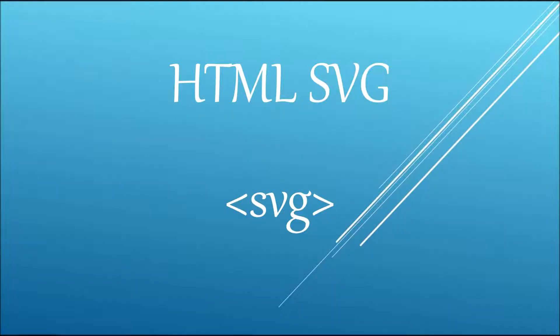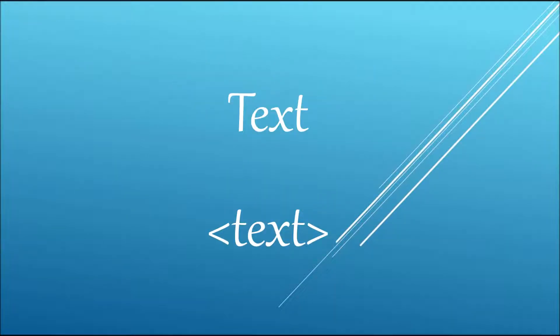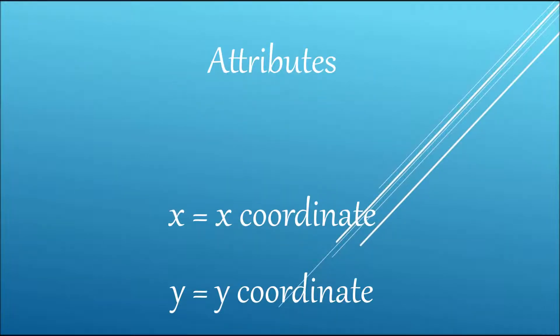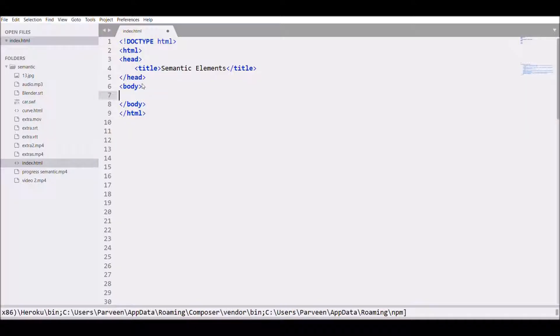Hello everyone. In this video I'll be talking about text in SVG. Text has x and y coordinates, so let's see how we can do that. First, write the SVG tag and give it a height and width of 200 and 200.